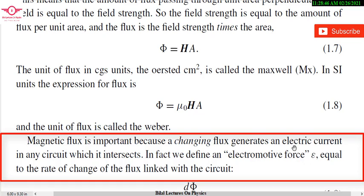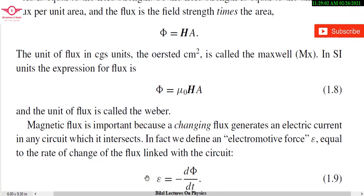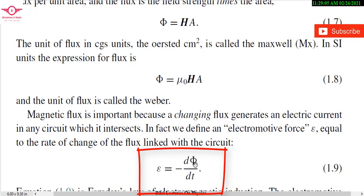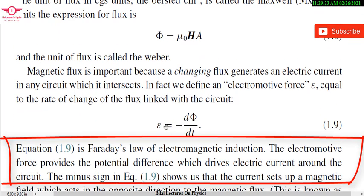We define the electromotive force (EMF) as equal to the rate of change of the flux linked with the circuit. In the circuit, the electromotive force E is introduced and is equal to the rate of change of flux: E = -dΦ/dt. The minus sign denotes that the electric current produced is in the opposite direction to the changing magnetic flux.